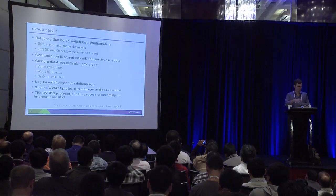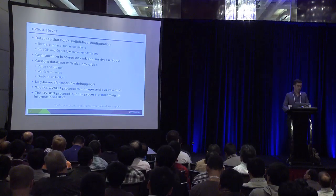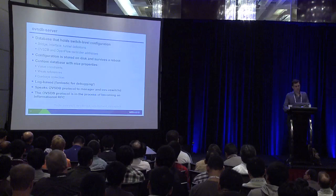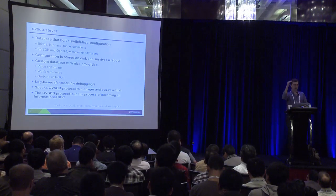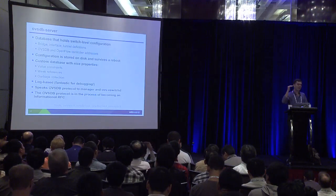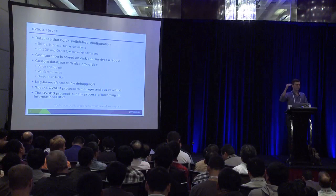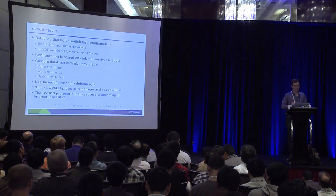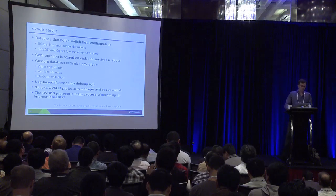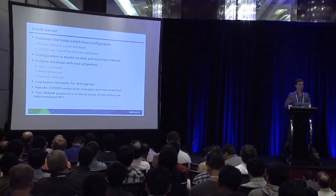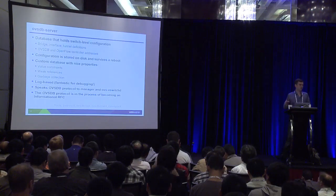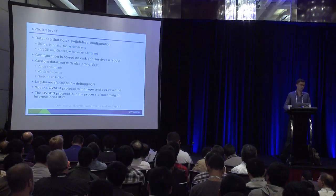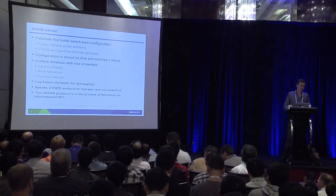This is an actual database with database properties. One aspect of the implementation is that it's log-based, meaning that rather than just storing the current state of the database, it has all the changes that have happened to the database — which makes it very useful for debugging because you can see what changes were made and figure out how you got into that state. The protocol that OVSDB server speaks is OVSDB — it's JSON RPC-based and is in the process of becoming an informational RFC at the IETF.